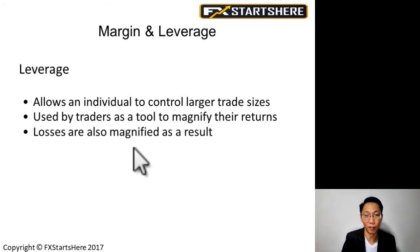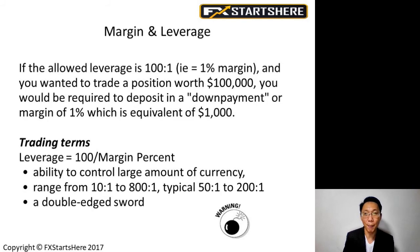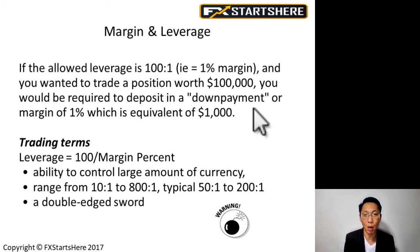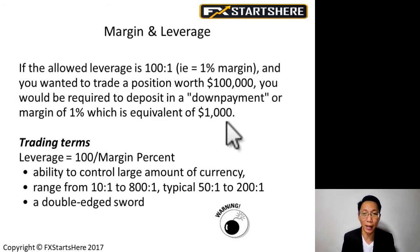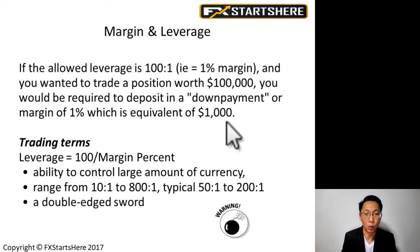But don't forget, you can also lose — your losses are magnified as well. So you can lose big as a result of leverage. For example, if the allowed leverage is 100:1, this means a one percent margin. If you wanted to trade a position worth a hundred thousand dollars — one standard lot — you would be required to deposit a margin of one percent, equivalent to one thousand dollars. So for every one standard lot, you need at least one thousand dollars set aside as a margin deposit.